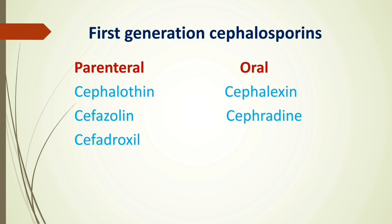Let's go through the various generations. For first generation cephalosporins, both parenteral and oral dosage forms are available. Parenteral formulations include cephalothin, cephazolin, and cephadroxil, and oral formulations include cephalexin and cephradine. The trick to memorize first generation cephalosporins: all first generation drugs contain the prefix 'cepha' — like cephalothin, cephazolin, cephadroxil, cephalexin, and cephradine.